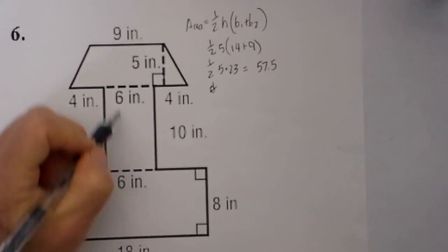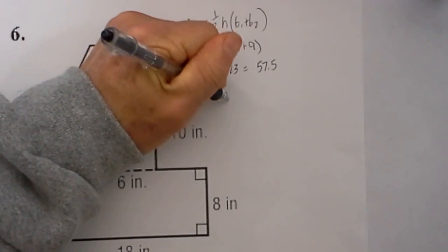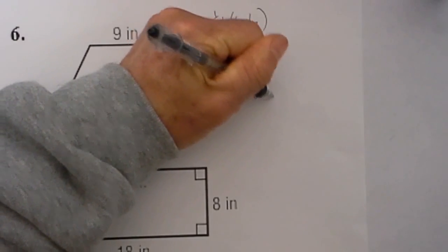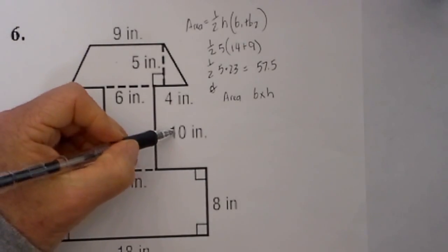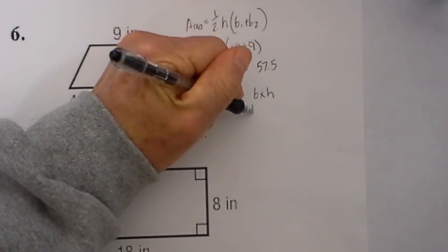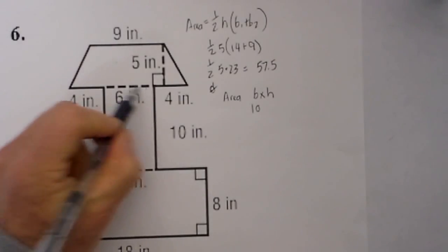Next we have a rectangle, and the area of a rectangle is base times height. So we have a base of 10 and a height of 6, so that will equal 60.